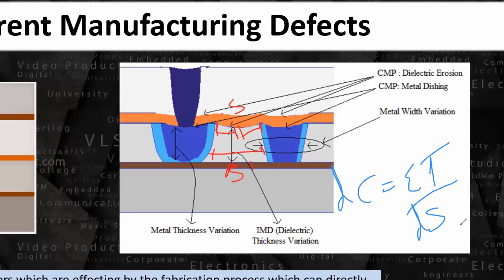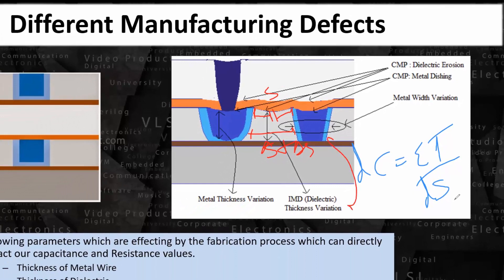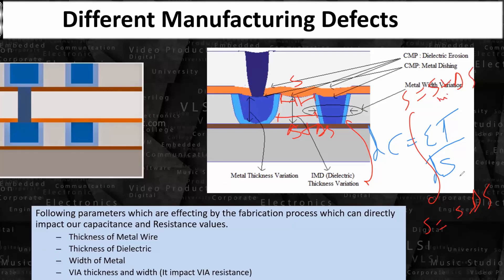What we do instead is use dC and dS. We calculate the capacitance in very small portions — for this small element the space is s, and for the next element the space is s + Δs. Like we did in first-semester engineering or even in 11th and 12th grade: dC = ε·t / ds, and then we integrate this from s_min to s_max. So we integrate over the full range of spacings to get the effective capacitance C_effective.